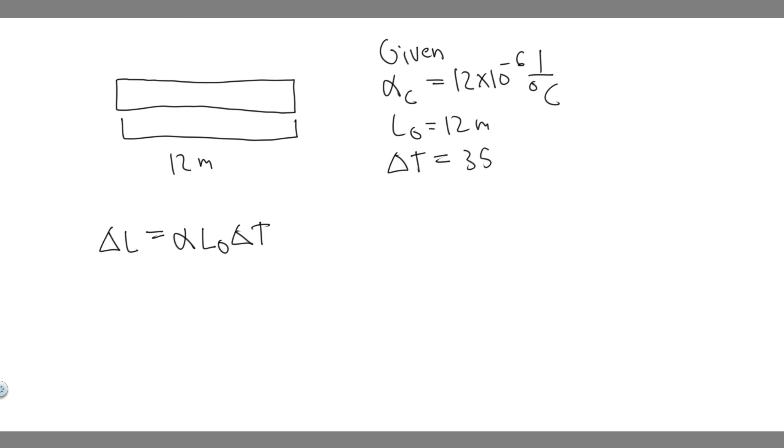And so now we've got everything we need, we just have to plug it in. So going ahead and doing this, alpha 12 times 10 to the minus 6, multiplied by L initial, which is 12, and then multiplied by the change in temperature, which is 35. So go ahead and plug this in. So 12 times 10 to the minus 6, multiply that by 12, and then multiply this by 35. And so when you go ahead and do this, you're going to get delta L equals 0.00504.